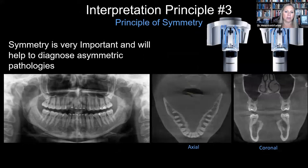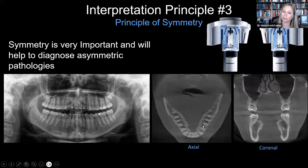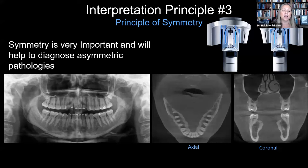The principle of symmetry is huge, and when you're just starting out, it is extremely helpful. You can always compare one side to the other. If this side looks very similar to that side, I know it's normal. So in case you cannot remember all your anatomy from dental school, we want to reorient the patient so we can use symmetry — going down through in the axial as well as in our coronal sections.